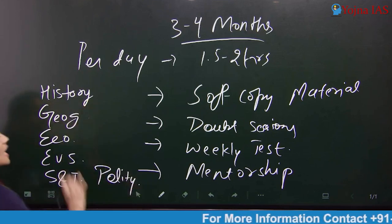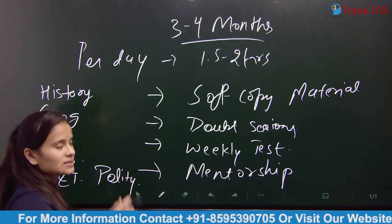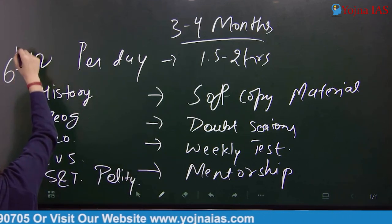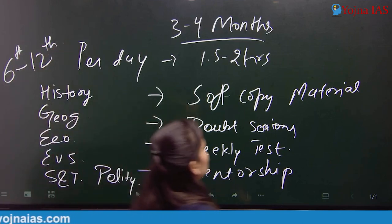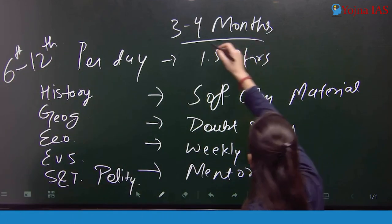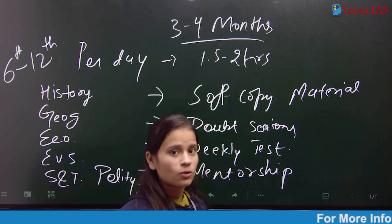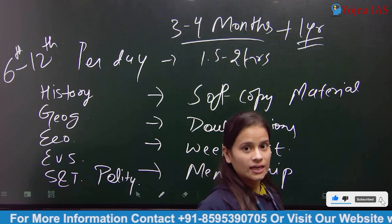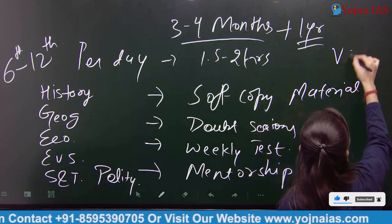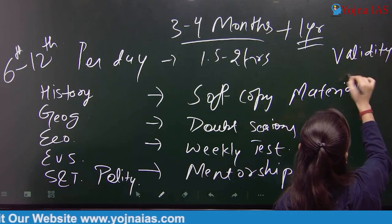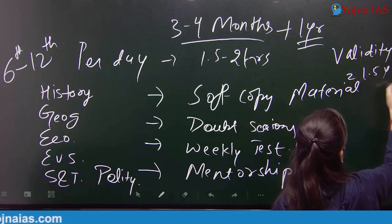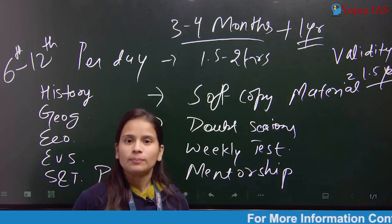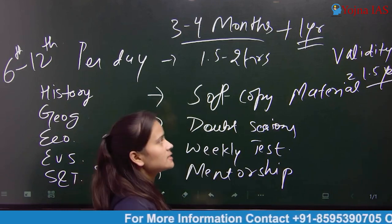History is available in your class 6-12. The duration of your course is 3-4 months. After completion of course, for 1 year you will get the lectures. So the validity of course will be 1.5 years. You can access multiple times when you want.